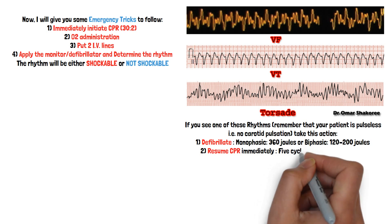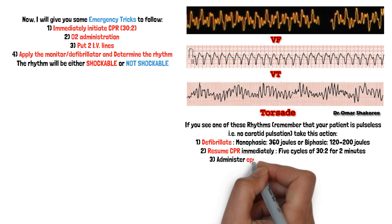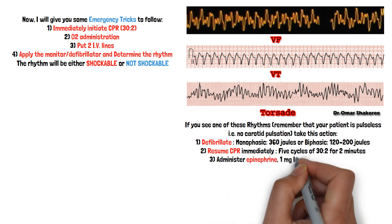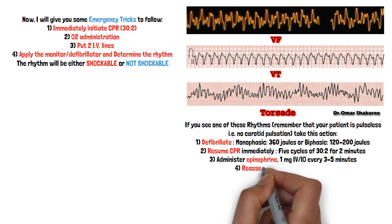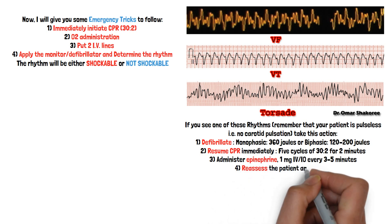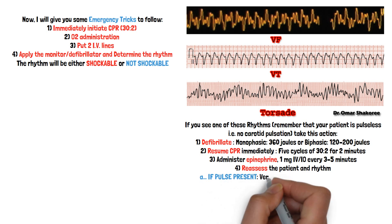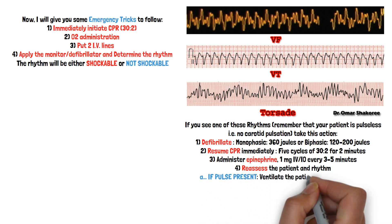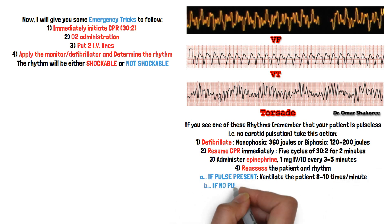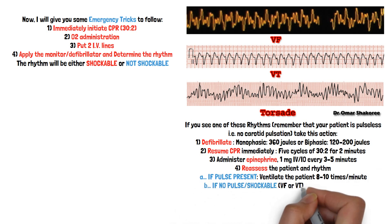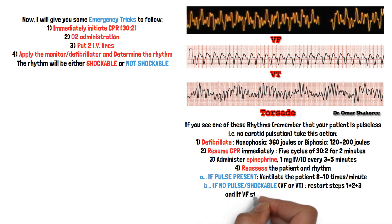So if you have VF, VT, or Torsades de Pointes with no pulse, what will you do? Immediately give the shock. If you have a monophasic device, give 360 joules; if biphasic, give 200 joules or 120 joules. After giving the first shock, resume CPR immediately, then you may need drugs like adrenaline.